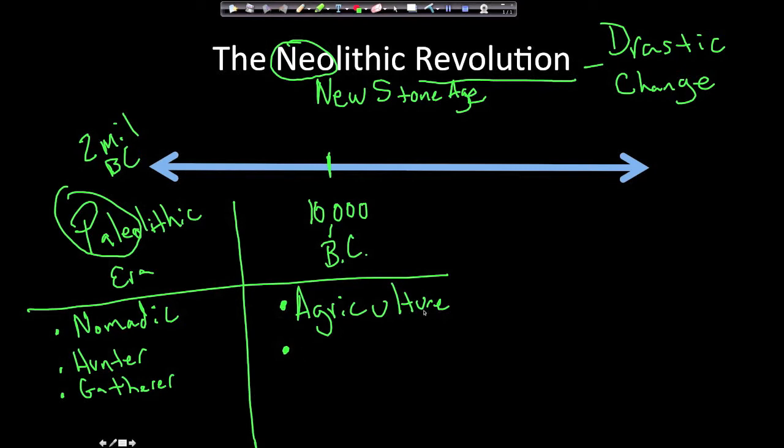Why they started farming is the uncertain part. Did they start because they could no longer hunt enough food to survive, or did they just figure out how to farm? Was it the end of the Ice Age, so the weather was good for farming? That question remains unknown. The main thing in the Neolithic Revolution is the advent of agriculture — people started farming.